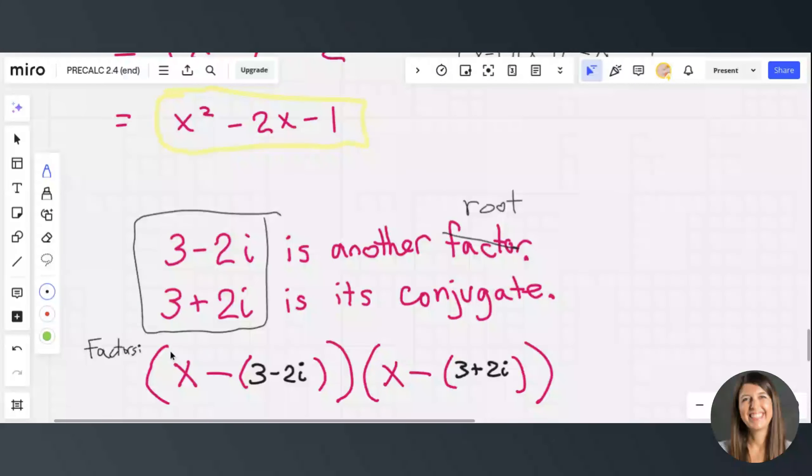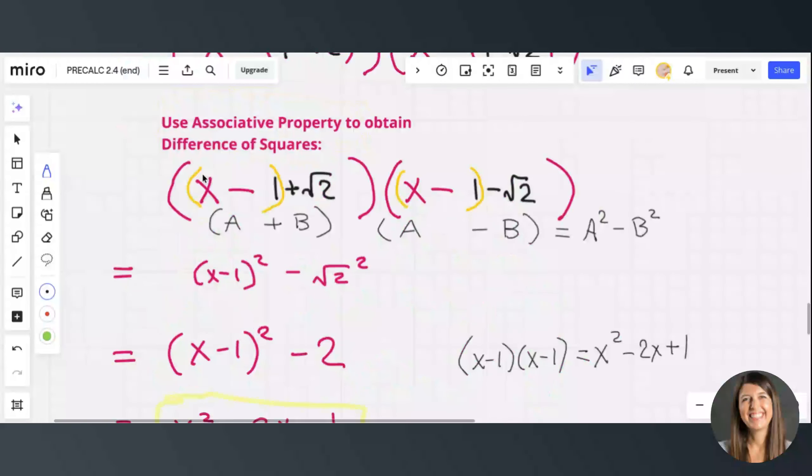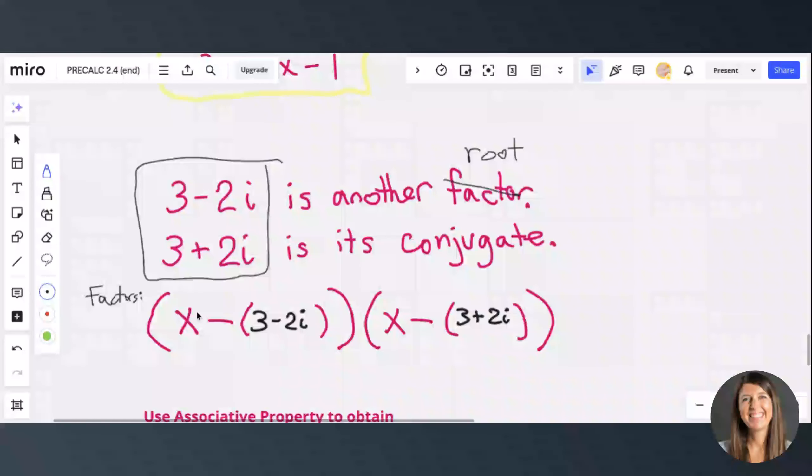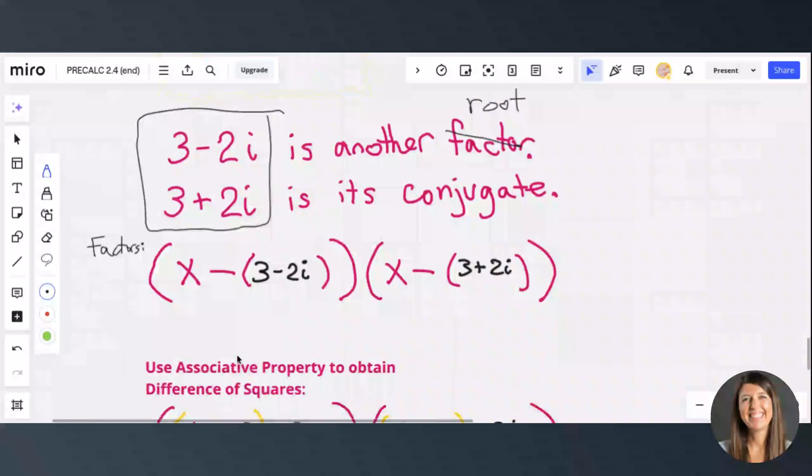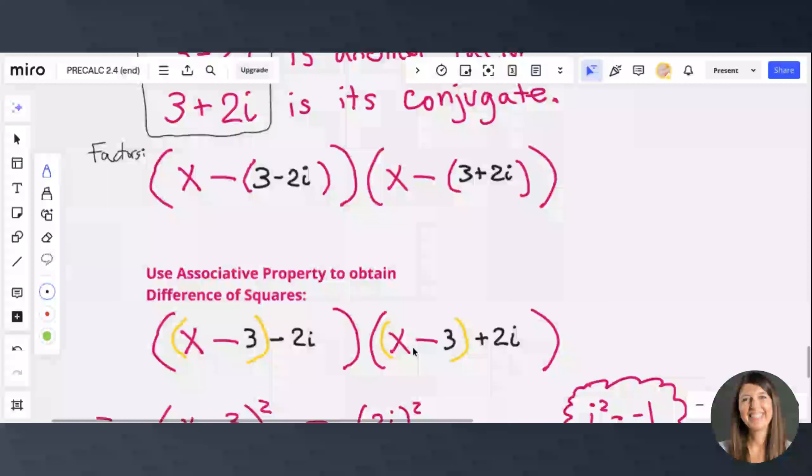Now we're going to, just like we did before, use the associative property to obtain the difference of squares. We're going to swap out these parentheses to be in front to surround the x minus 3 in the yellow parentheses.